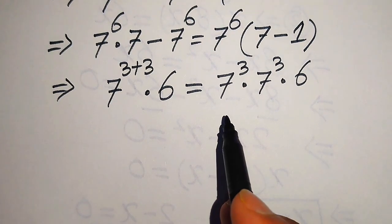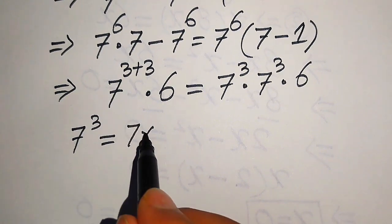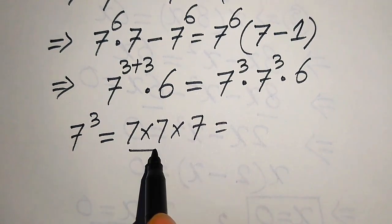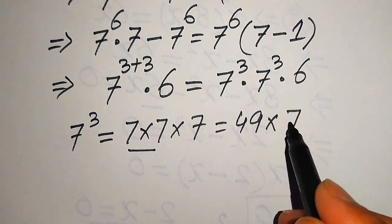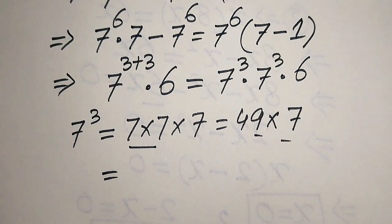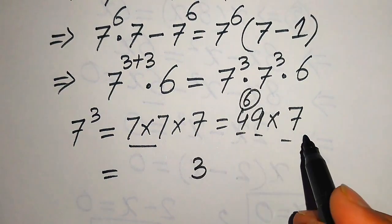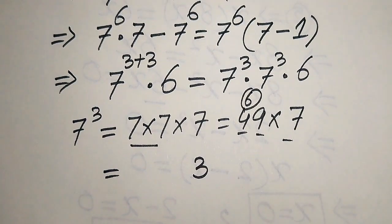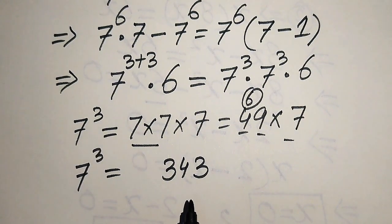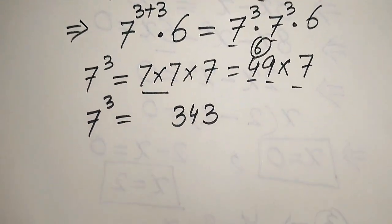So our expression becomes 7 cubed multiplied by 7 cubed multiplied by 6. We now need to find 7 cubed. 7 cubed means we multiply 7 three times: 7 times 7 is 49, and 49 times 7 — 7 nines are 63, write 3 carry 6; 4 times 7 is 28, plus 6 is 34. So 7 cubed equals 343.